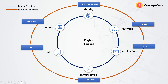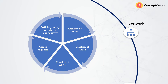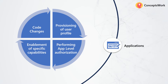Let me give you a brief introduction to what kind of logs can be generated for each digital state. For identity — taking Active Directory as an example — there will be logs related to user account creation, group creation, role creation, privilege provisioning, sign-in attempts, and deprovisioning of identities. For network, you have creation of VLANs, creation of specific routes on a router, creation of wireless networks, access requests, and defining a tiering model for external connectivity. From an application standpoint, you have logs about provisioning of user profiles, performing app-level authorization, enablement of specific capabilities, or code changes.